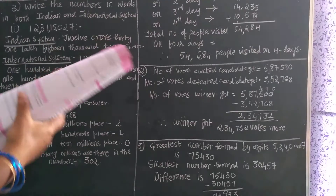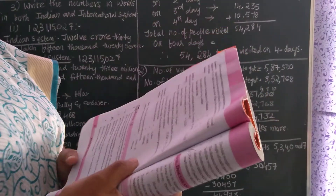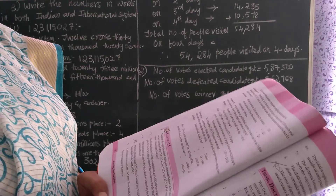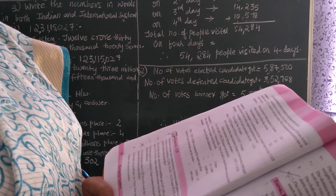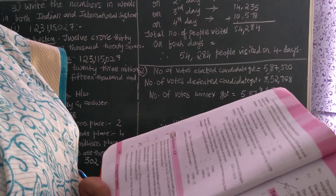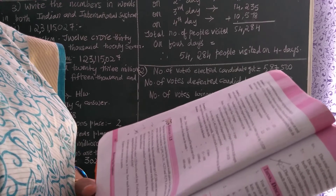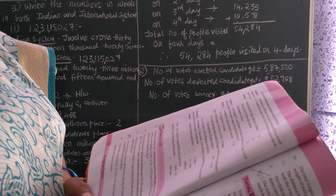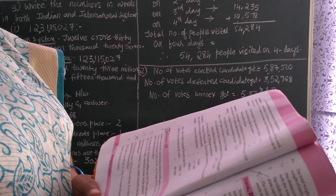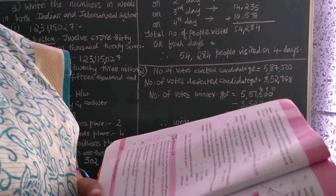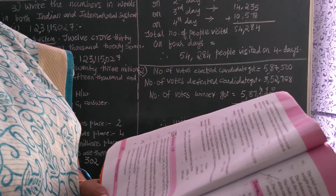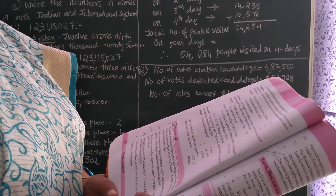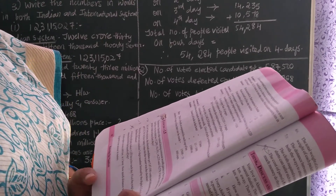Now I will read the question and solve for you. This is exercise 1.5, page number 12, related to word problems. First problem: the number of people who visited during Commonwealth Games in New Delhi for the first four days was recorded as 15,290 on day one; 14,181 on the second day; 14,245 on the third day; and 10,578 on the fourth day. Find the total number of people visited in these four days.